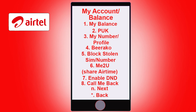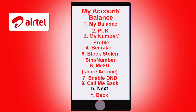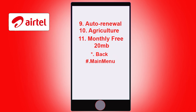On this menu, go all the way down to option letter N and choose option letter N, which is Next. After choosing option N, another menu is going to pop up, and on that menu you're going to choose option 9, which is Auto Renewal.